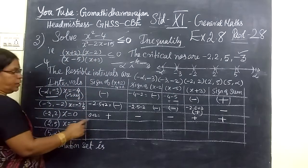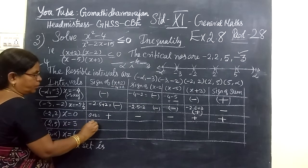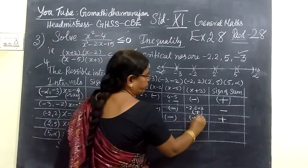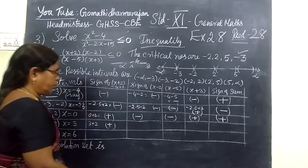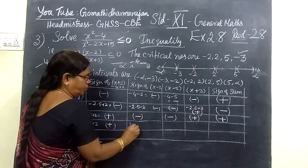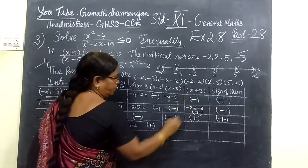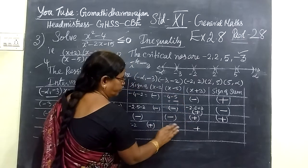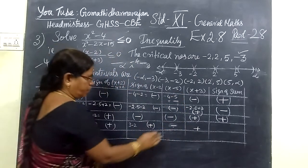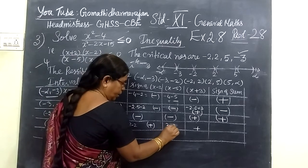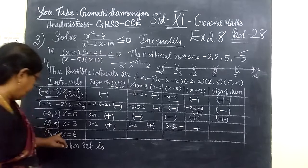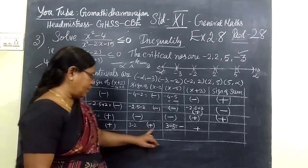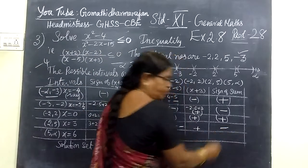Then x is equal to 3. (3 + 2) gives plus sign; (3 - 2) gives plus sign; (3 - 5) gives minus 2, so minus sign; (3 + 3) gives plus sign. So plus, plus, minus, plus — the result is a minus sign.